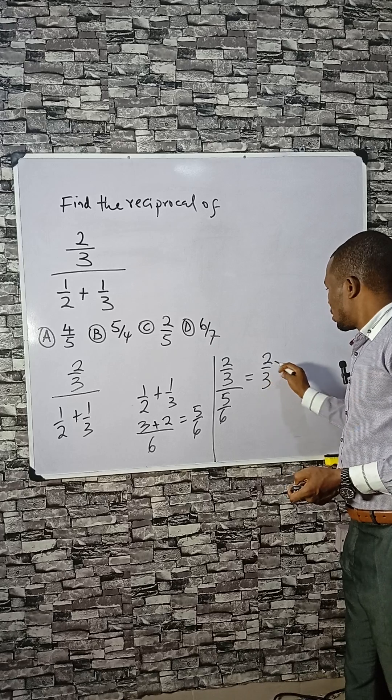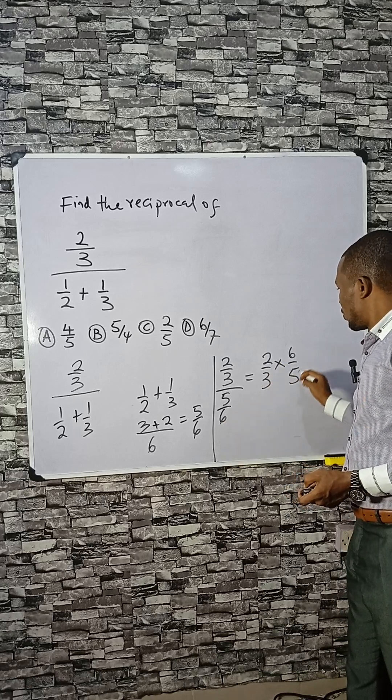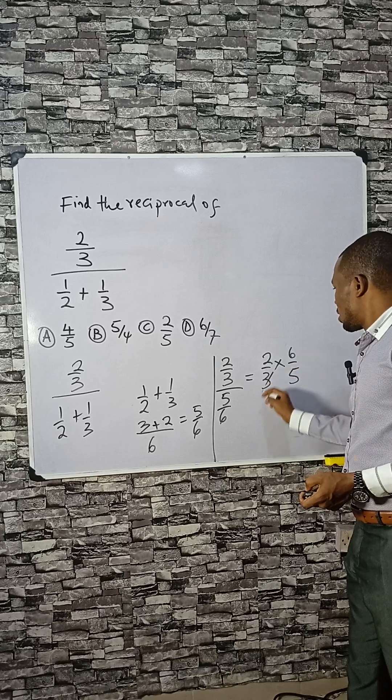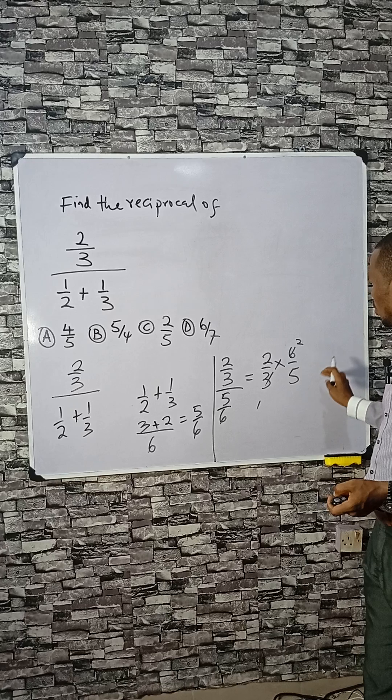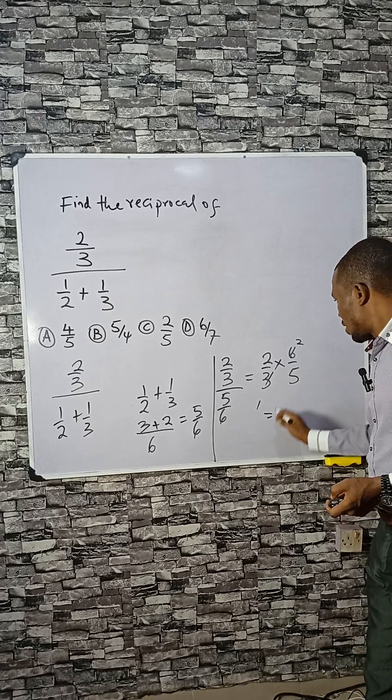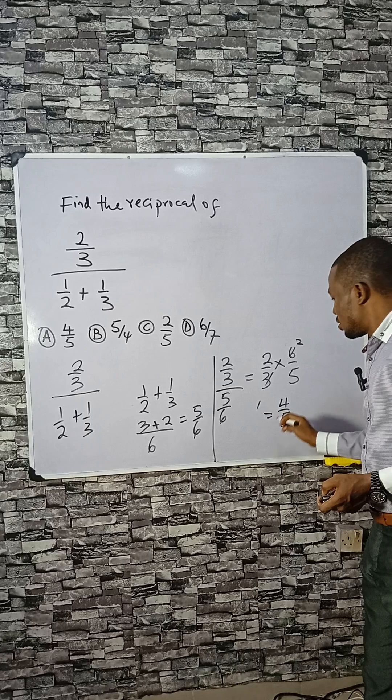You can write this as 2 divided by 3 times 6 divided by 5. You see, this can cancel with this. So that 2 times 2 is 4 divided by 5. Have it as 4 divided by 5.